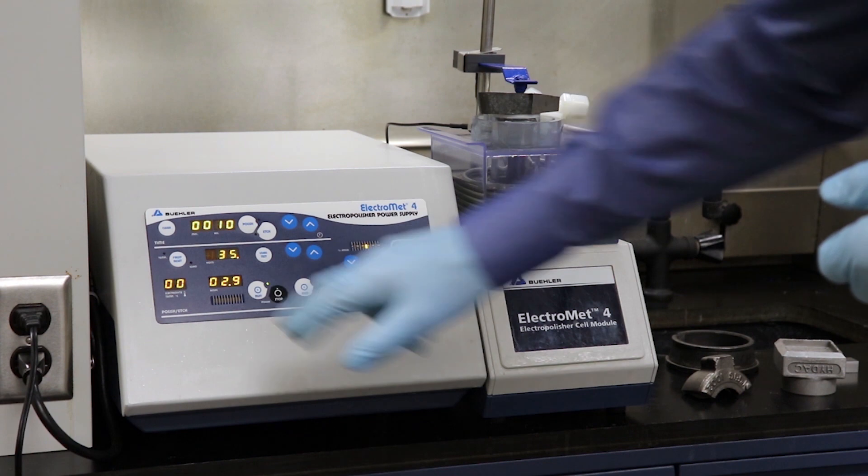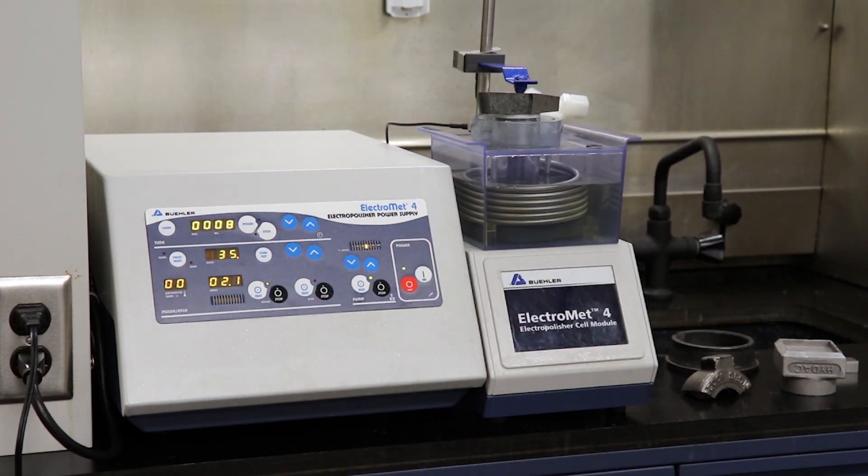Now all we need to do is hit the start. We've got about 2 amps of current in the polishing cycle, 1.5 amps, and drop to about 0.1 to 0.2 amps during the etch cycle.